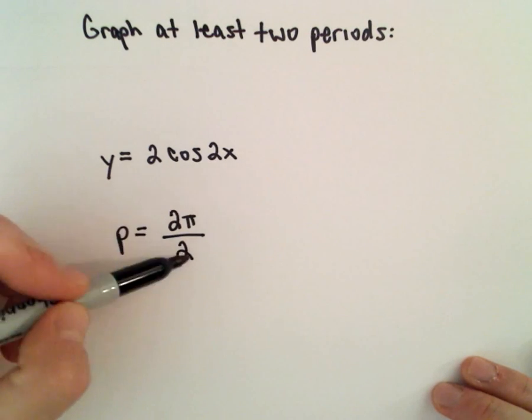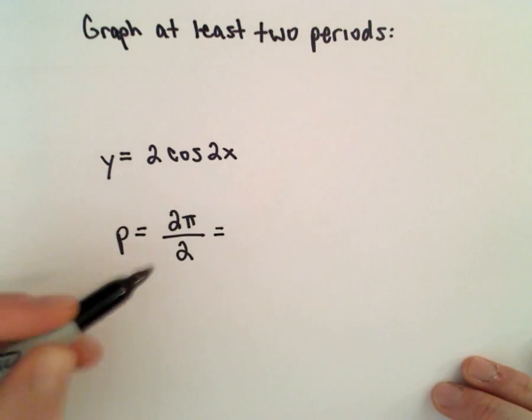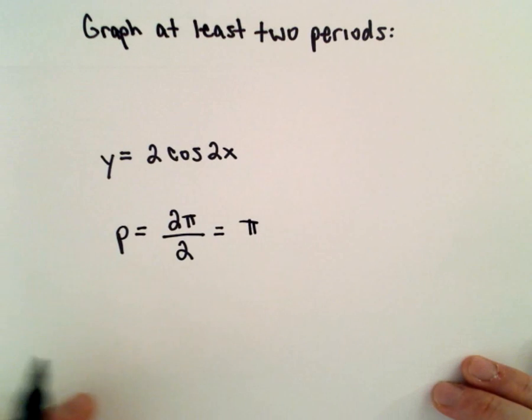So we'll take the absolute value of positive 2, which is simply equal to 2. So the period will equal simply π.